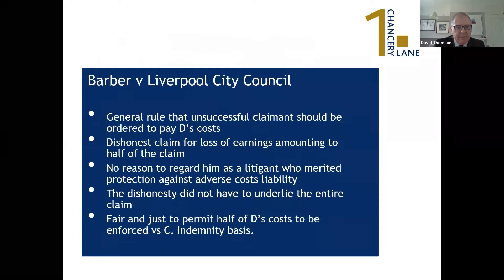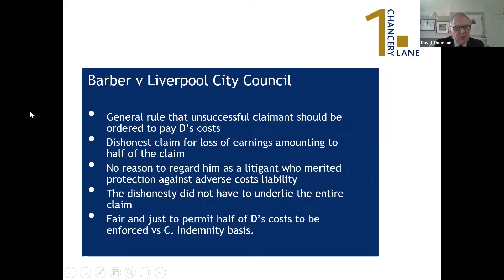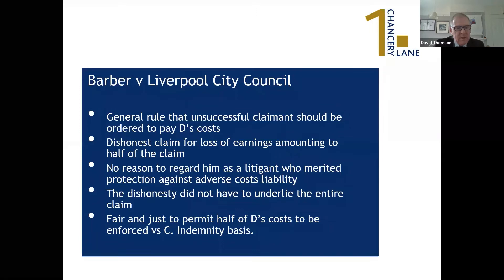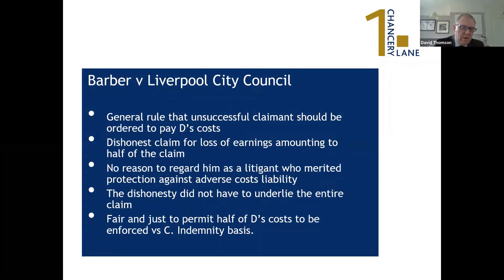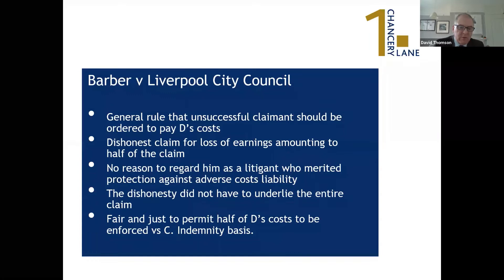Barber emphasised the general rule that an unsuccessful claimant should be ordered to pay costs. This was a dishonest claim for loss of earnings; there was no reason to find that the costs liability would cause him substantial problems, so the costs liability was imposed — and it was fair and just to permit half of his costs to be enforced against the claimant. There is an element there of proportionality in determining what proportion of costs to order, not necessarily all of them. The sting in the tail was that it wasn't just half the costs — they were awarded on an indemnity basis.